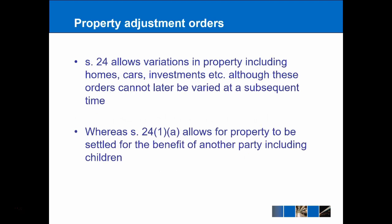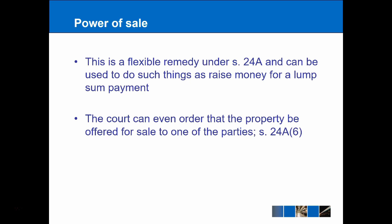Now we can move on to property as well, and these can be adjusted under Section 24. Often when we're thinking about property, it's just in relation to homes, but can also relate to cars and investments and different things like that. If the court decides to vary the ownership — say, for example, a piece of property was bought at 50-50 and the court adjusts it to 75-25 — that's not going to be varied later at a subsequent date, as we can do with things like periodical payment orders. Section 24 also allows the property to be settled for other parties, such as the children of the marriage. Where the property is not adjusted by the court, it can actually be sold through the power of sale, and this is a really flexible remedy available under Section 24A, which can be used in conjunction with a lump sum payment.